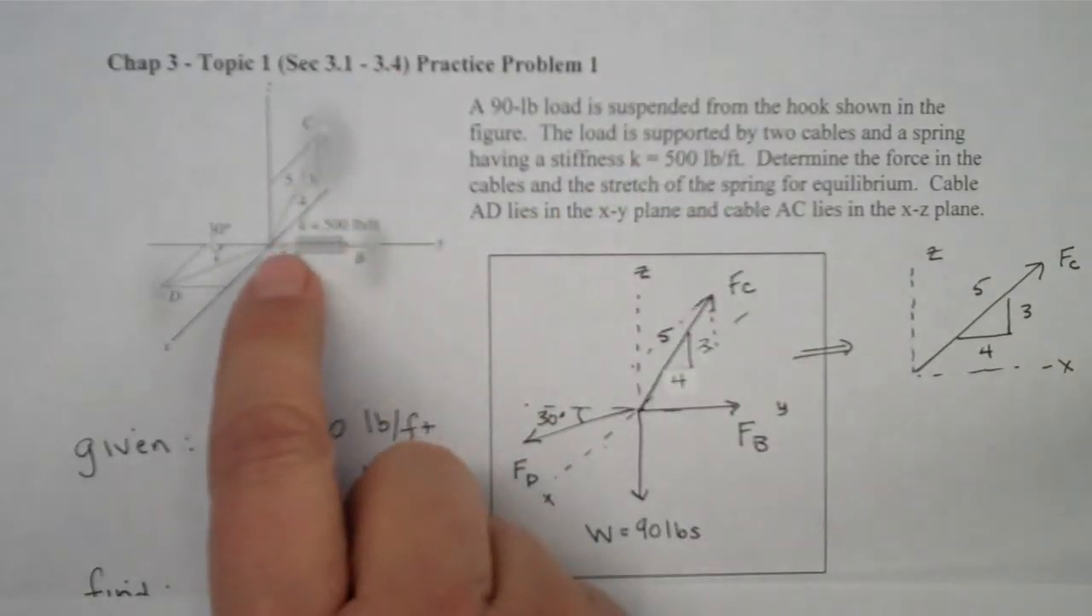We're told we have a 90 pound load suspended from a hook supported by two cables. So we have the cable going from point A to point C, a cable going from A to point D, and a spring pulling from A to point B. We're told the stiffness of the spring is K equals 500 pounds per foot.